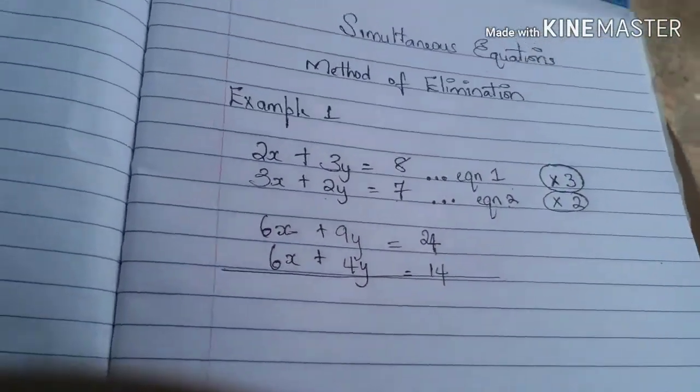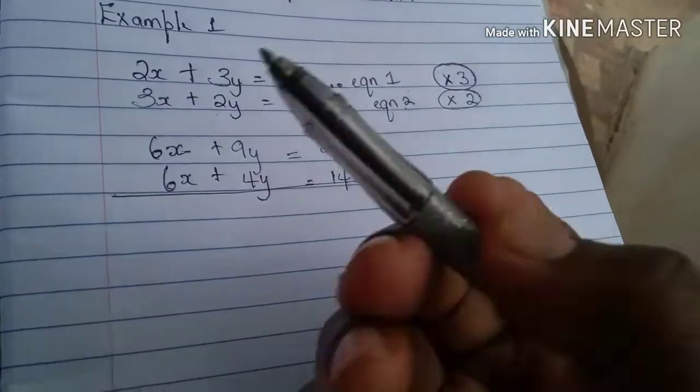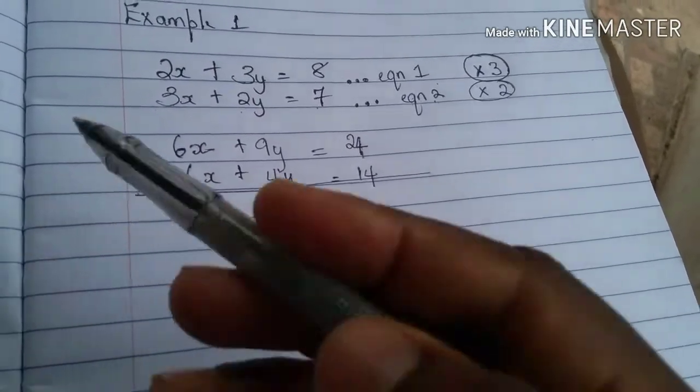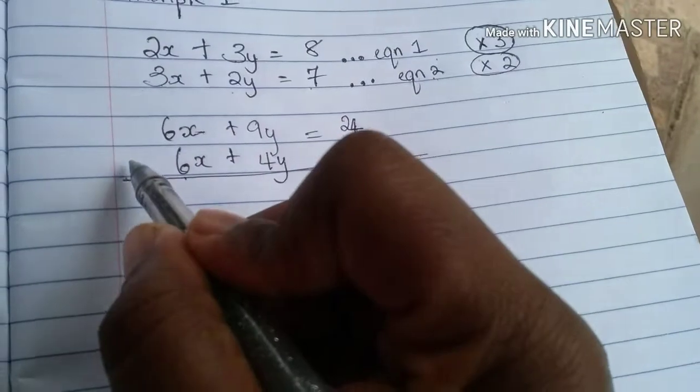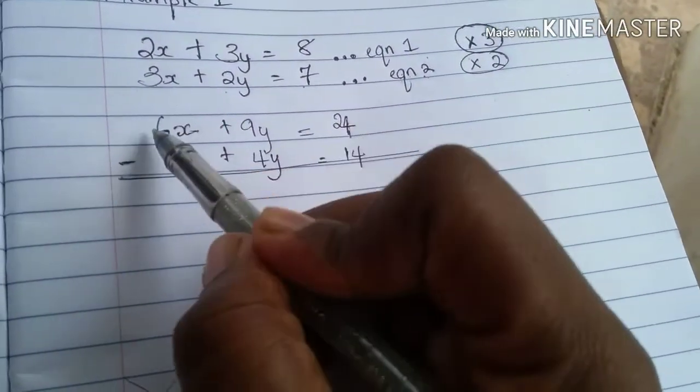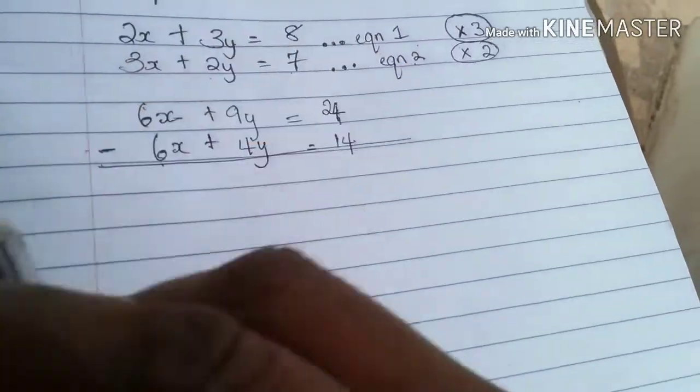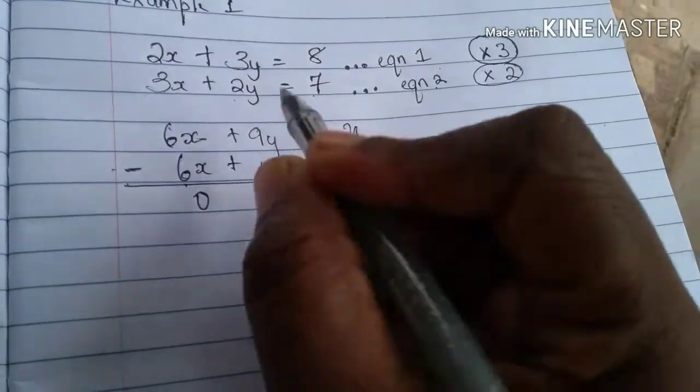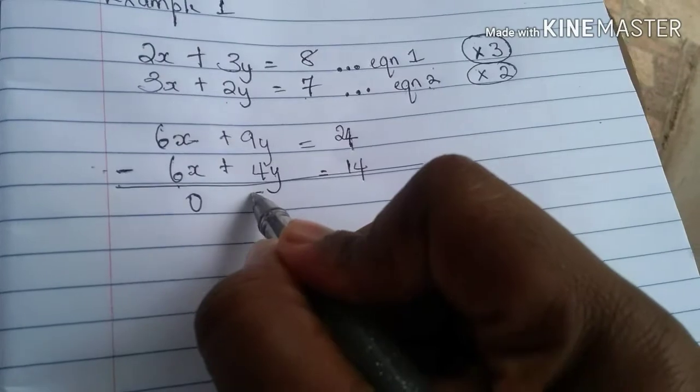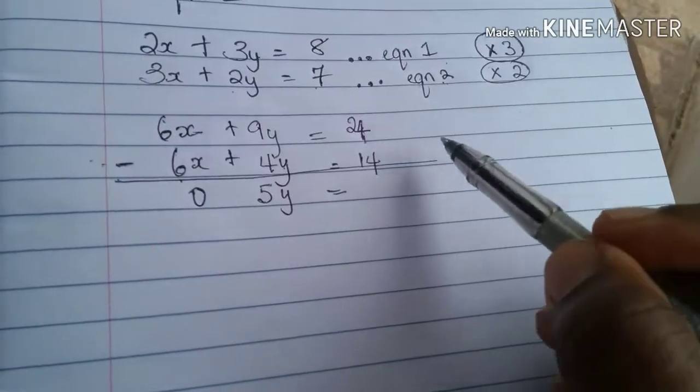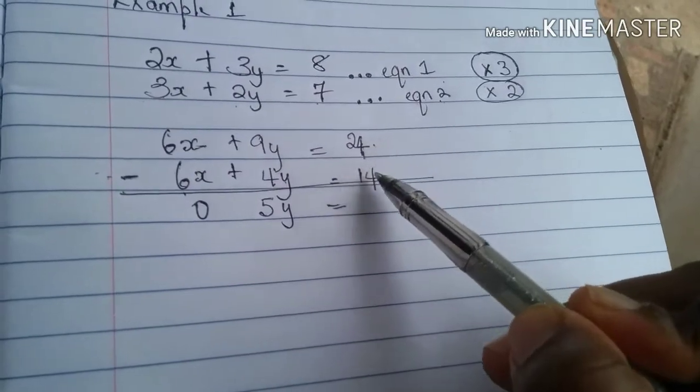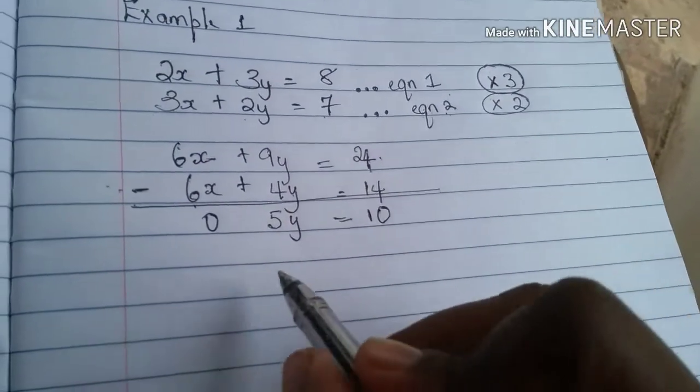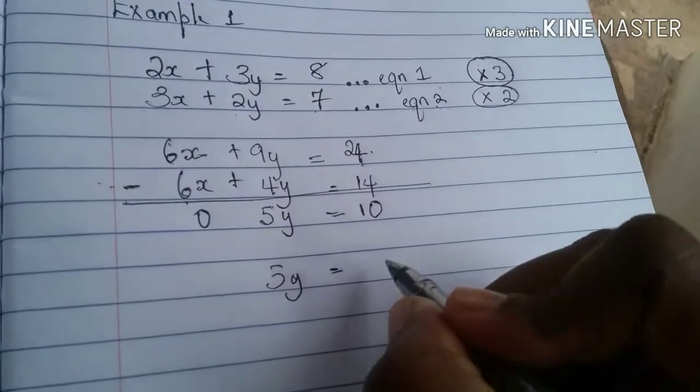So we want to eliminate x which means we need to subtract both. We want to eliminate x so therefore we are going to subtract the two equations. Because when we have 6x minus 6x, we get nil, no x at all. So that's 0. 9y minus 4y gives us 5y. And 24 minus 14 gives us 10. So we know that 5y is equal to 10.